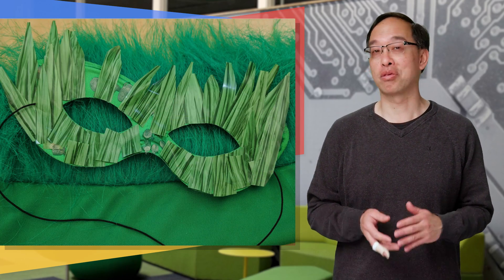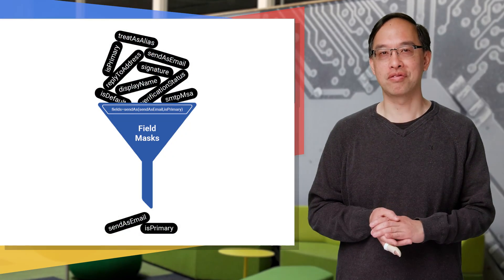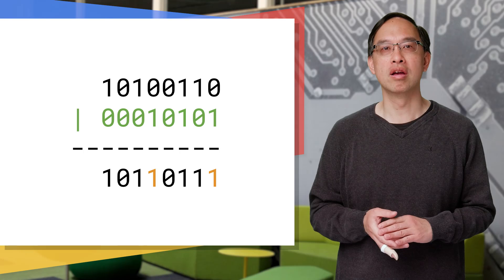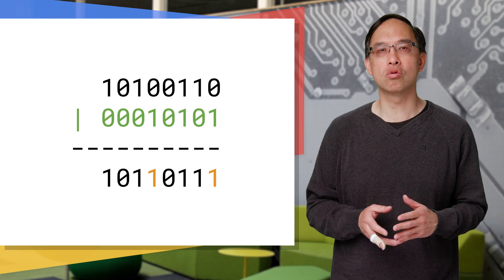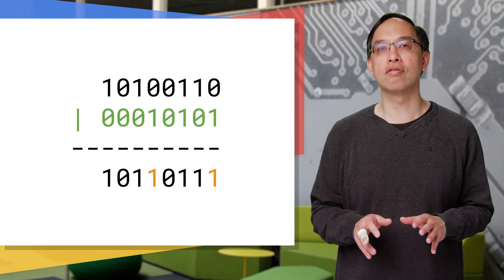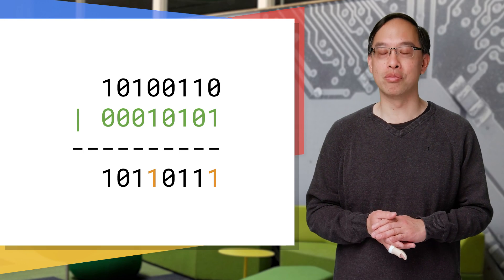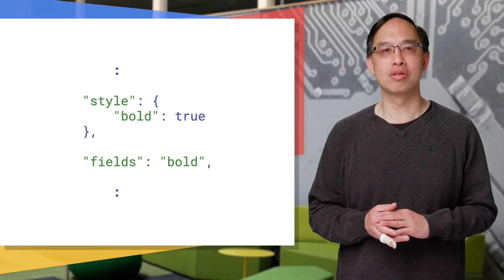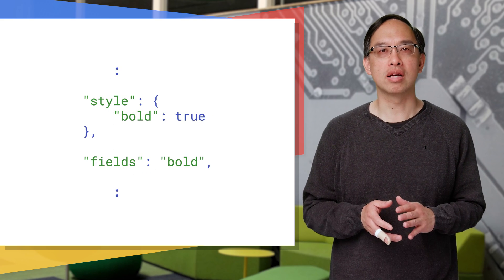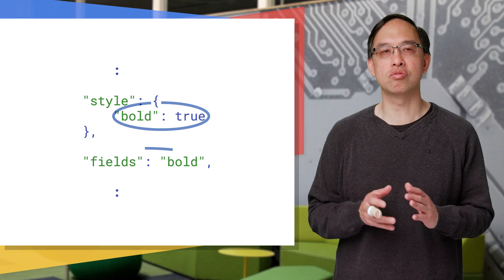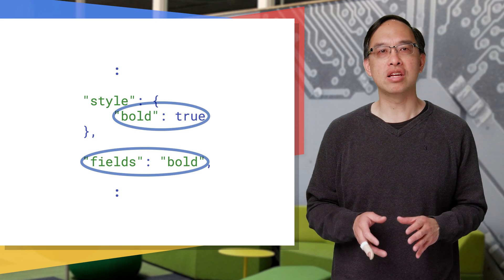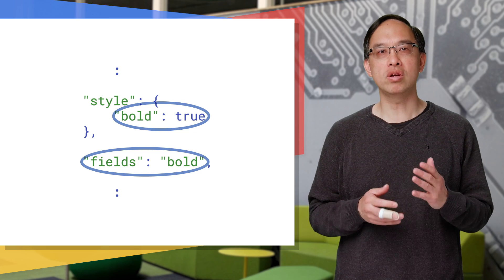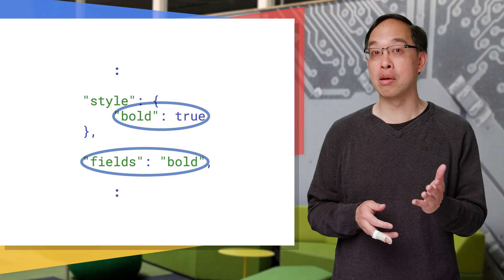Field masks aren't things you wear, but instead work like a filter. More specifically for updates, think of them as a bit mask, where data represented by bits that are on will be updated, whereas those that are off are ignored and remain the same. You pass in a field you're updating along with its name in the mask. Generally, the field mask will consist of exactly the attributes you're updating. If you provide additional fields in the mask that are not in the request, those attributes will be reset.